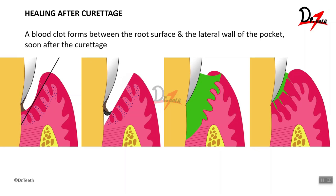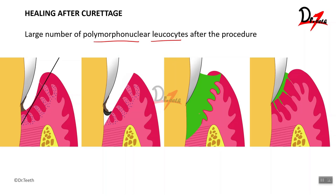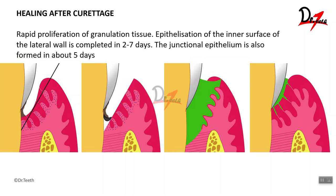Healing after curettage: immediately after curettage, a blood clot forms between the root surface and the lateral wall of the pocket, flooded with PMN cells — polymorphonuclear leukocytes or neutrophils. After this, there is rapid proliferation of granulation tissue. Epithelialization of the inner surface of the lateral wall is completed within two to seven days, whereas the junctional epithelium forms within five days.